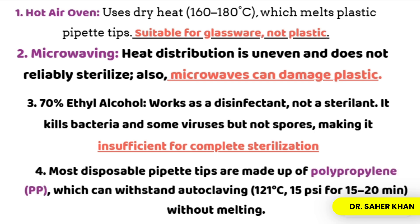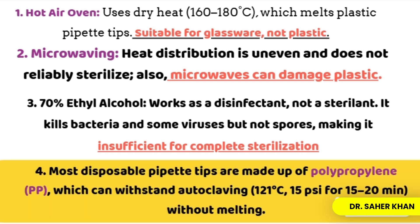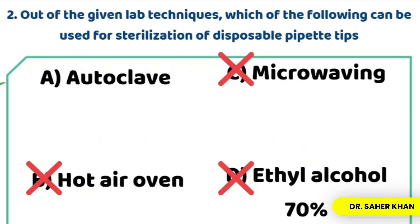The correct answer is autoclaving. Most disposable pipettes are made of polypropylene, which can withstand autoclaving at 121 degrees centigrade. So autoclaving is the correct method for sterilization.